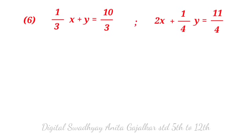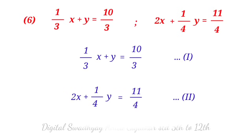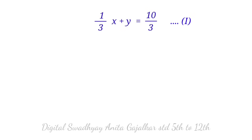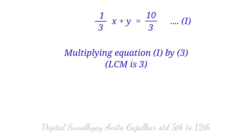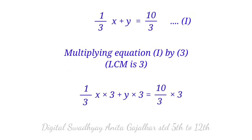Next problem: (1/3)x plus y equal to 10/3 (first equation), 2x plus (1/4)y equal to 11/4 (second equation). Simplifying equation first by multiplying by 3 (LCM is 3): x plus 3y equal to 10 (third equation).